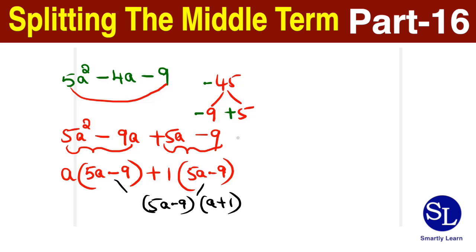And for those who have a doubt, if I reorder the middle term like this: 5a squared plus 5a minus 9a minus 9. I just changed the order. So now see how the split happens. I'm going to take the 5a common, so you get to have a plus 1.